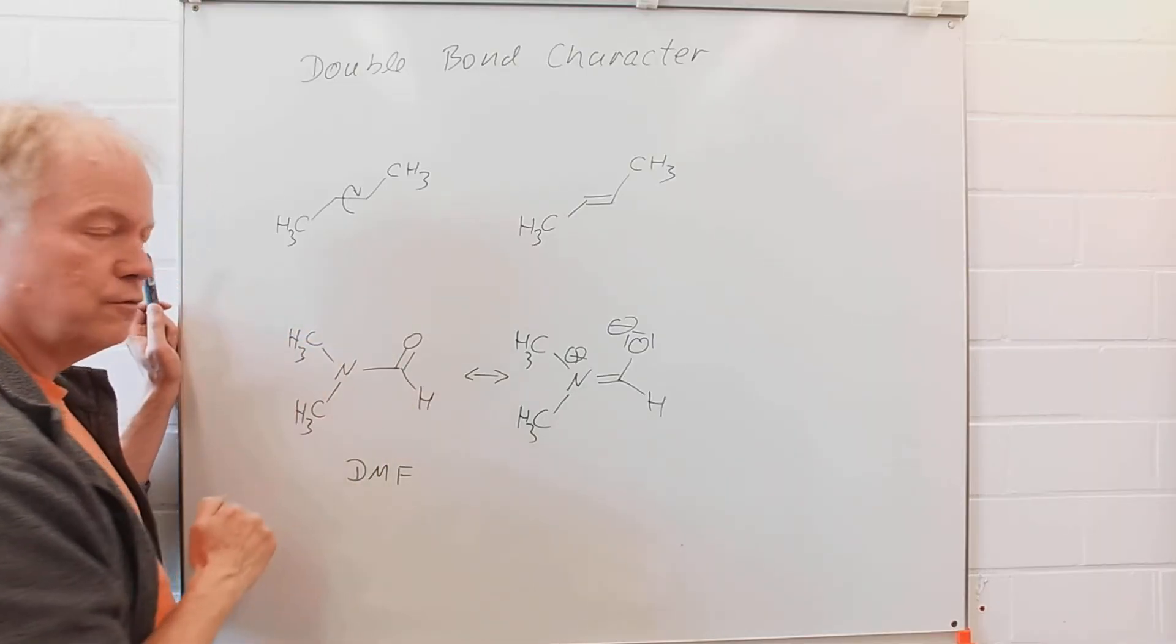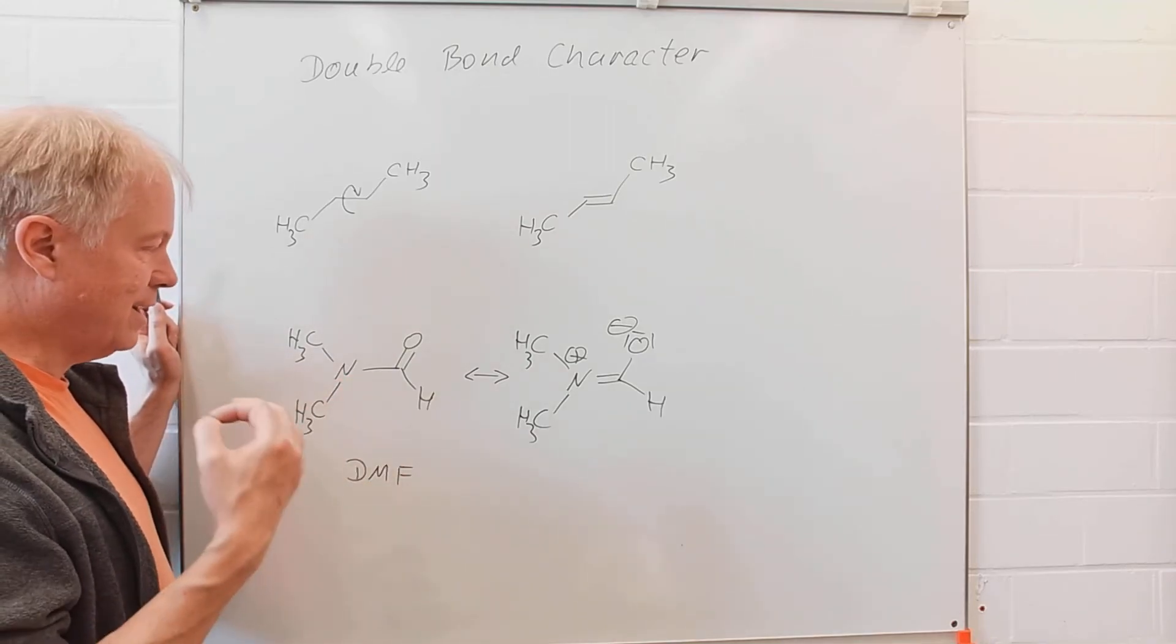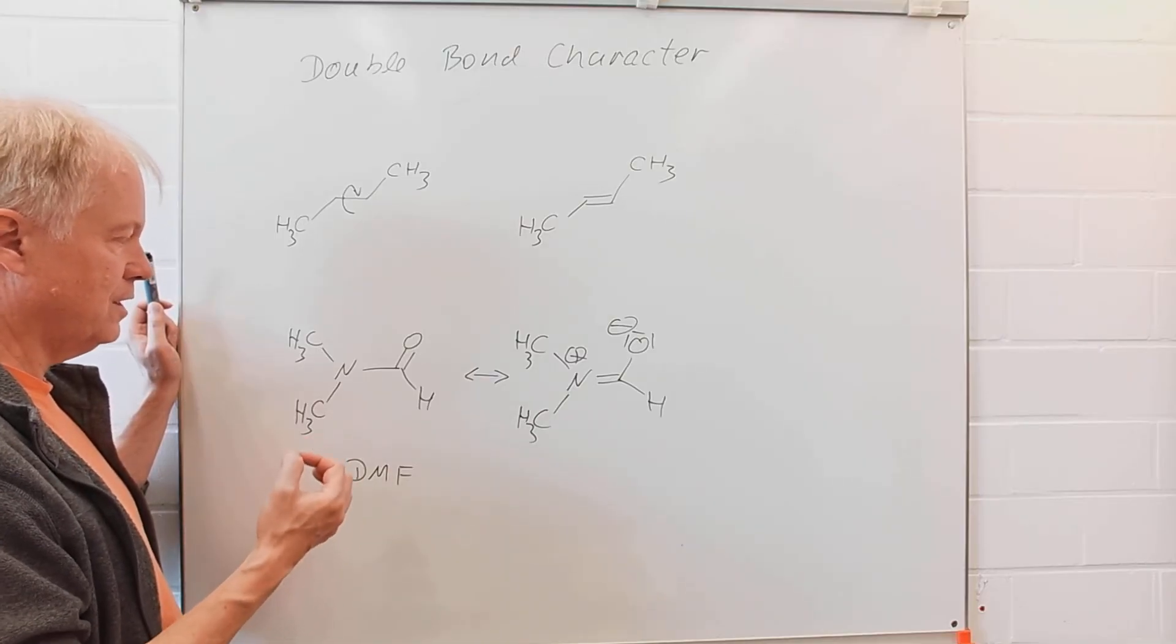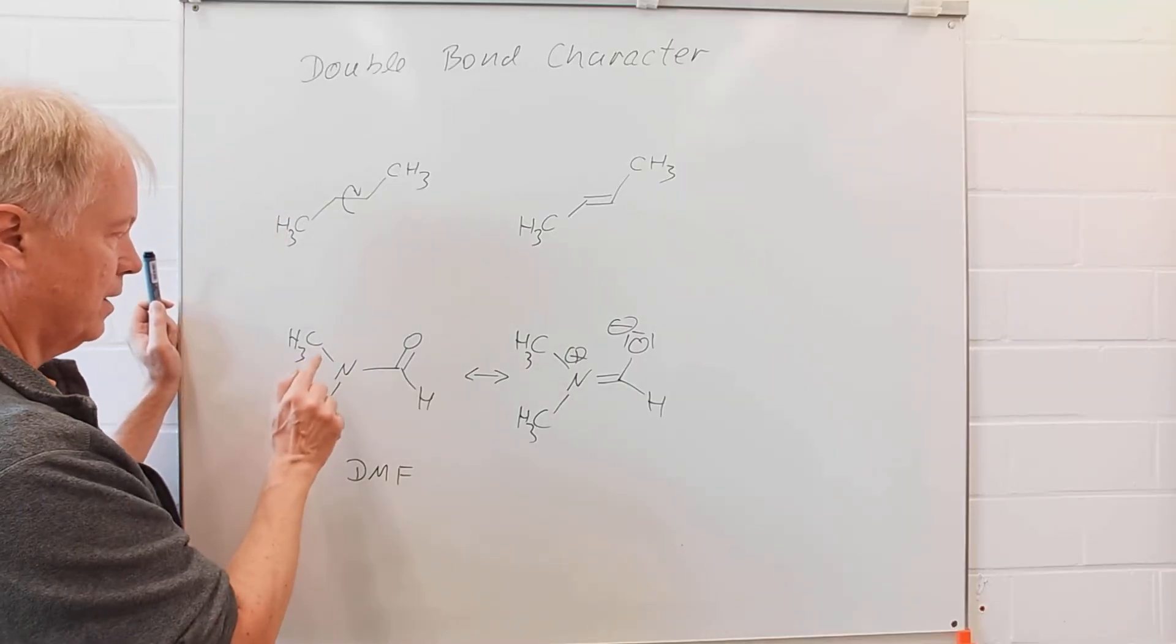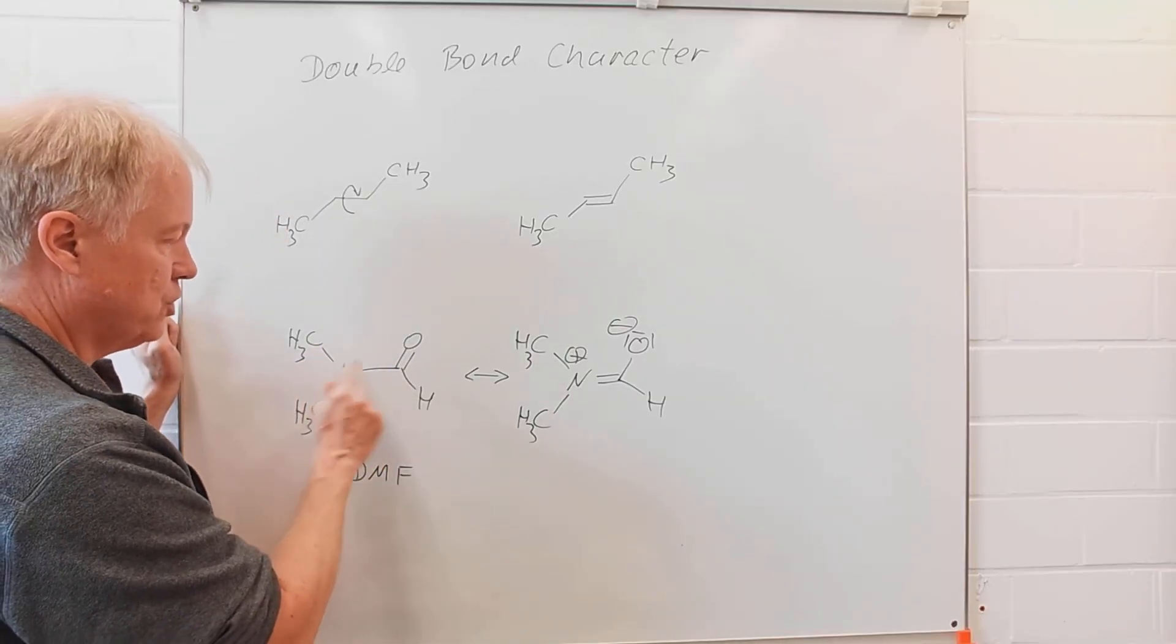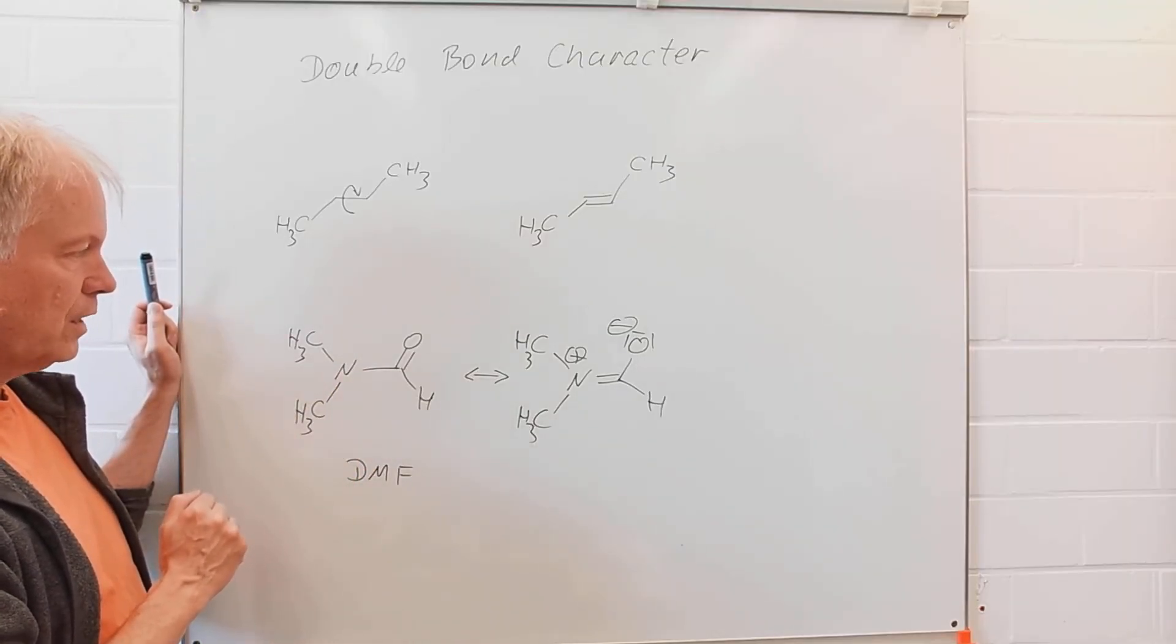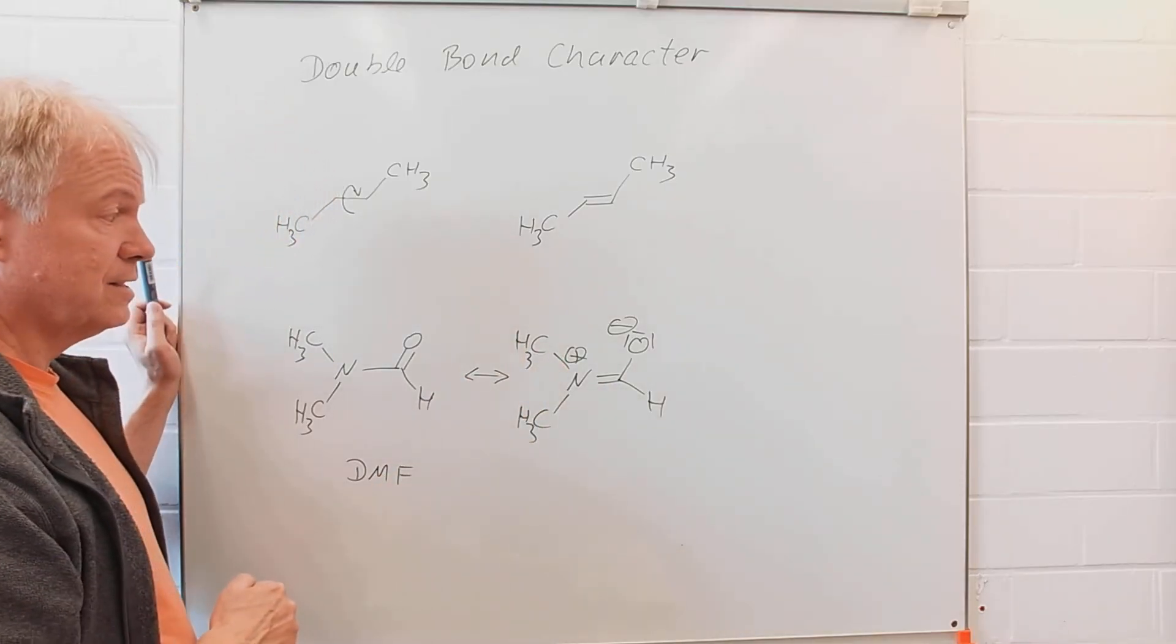That means on the NMR timescale—relative to the time needed to measure such an NMR—the rotation around that single bond is very slow. Why is this the case?